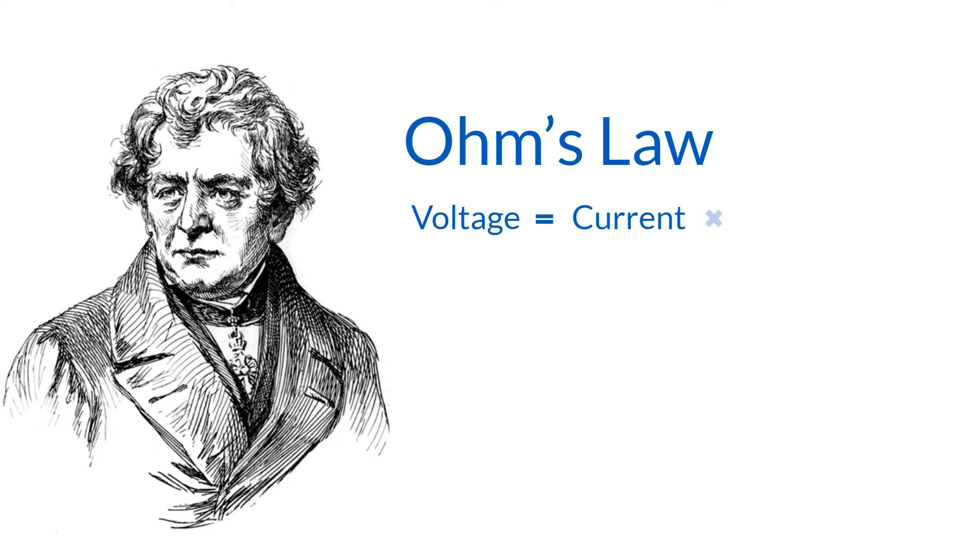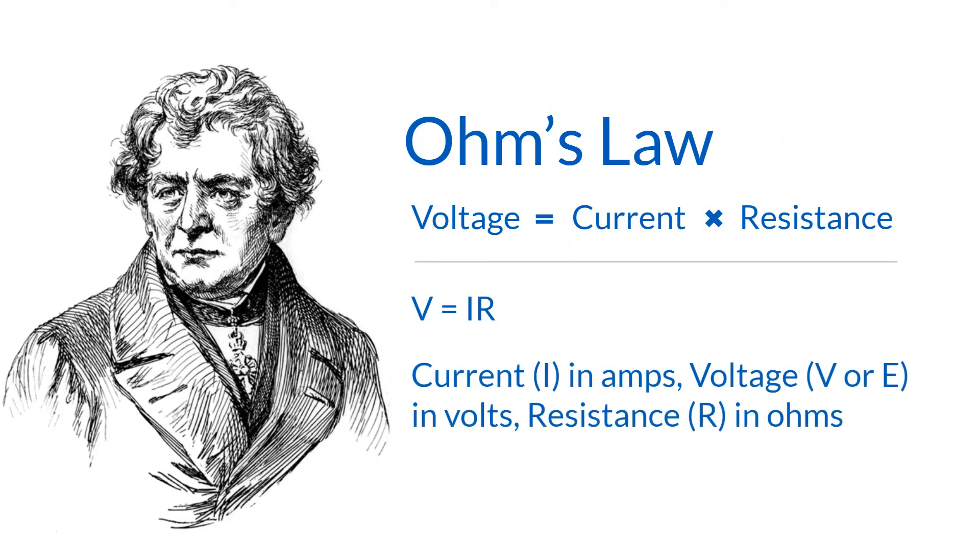Voltage equals current times resistance, or V equals IR. Current, represented by an I in amps. Voltage, V or E in volts. Resistance, represented by an R in Ohms.